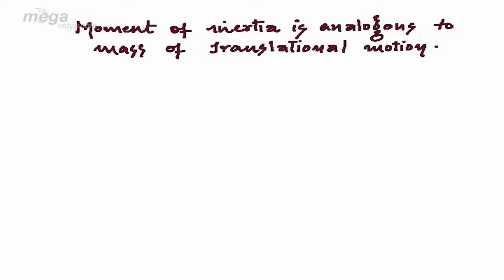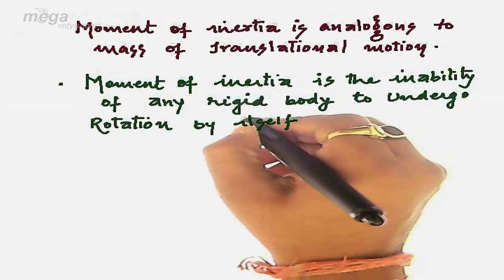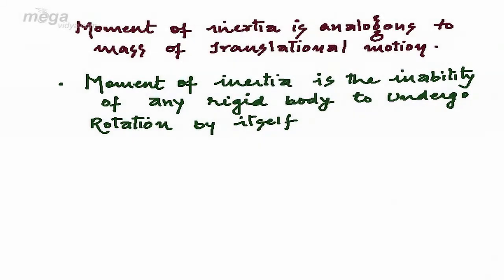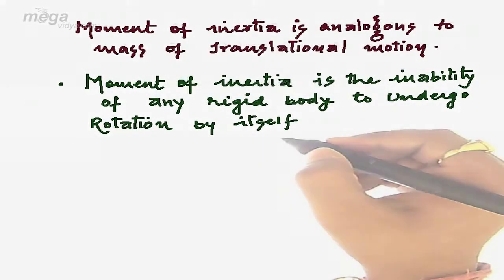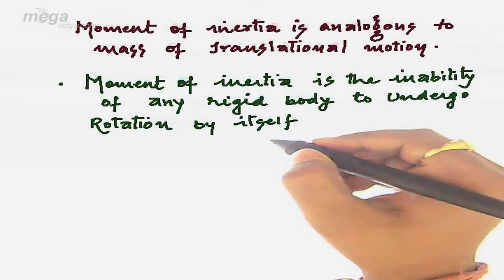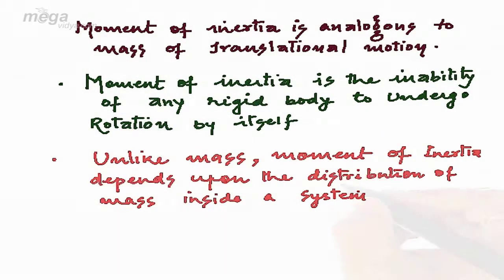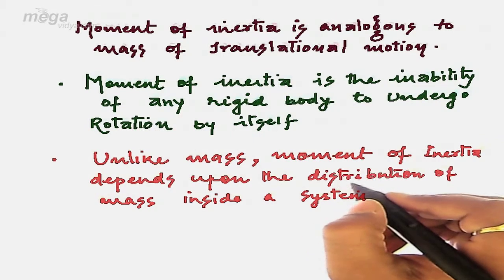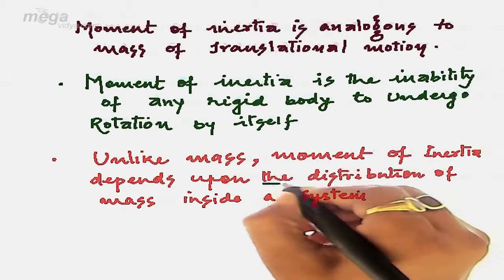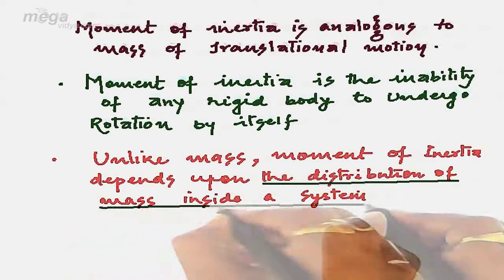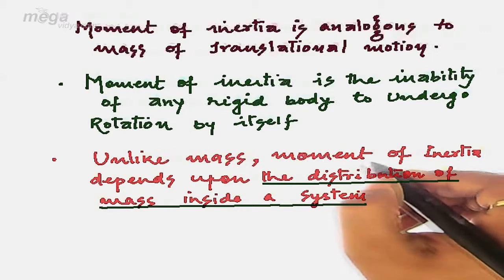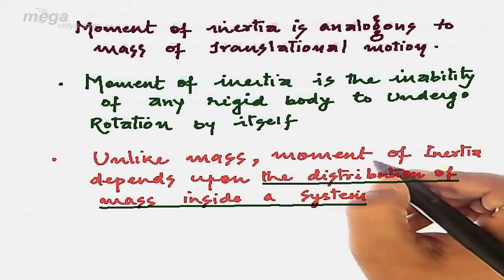Defining it formally, we can say moment of inertia is the inability of any rigid body. As I have already stated, moment of inertia is analogous to the mass of translational motion. But basically, unlike mass, the moment of inertia depends upon the distribution of mass inside any system. So firstly we have to understand how the mass is distributed inside any system.